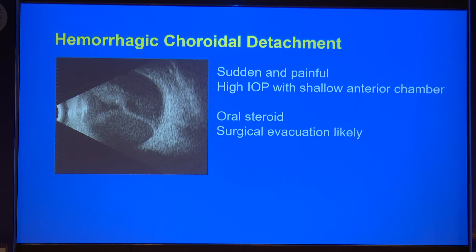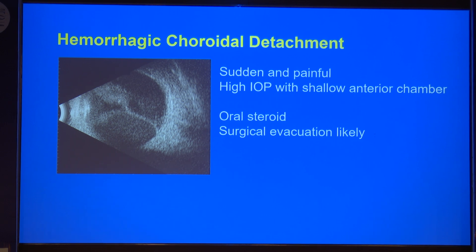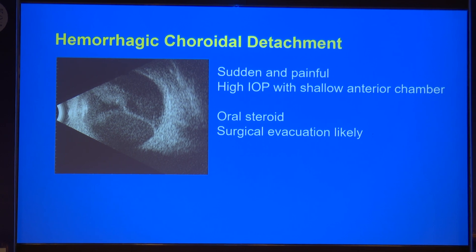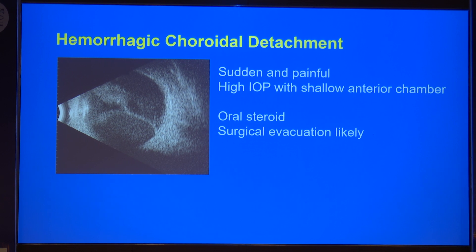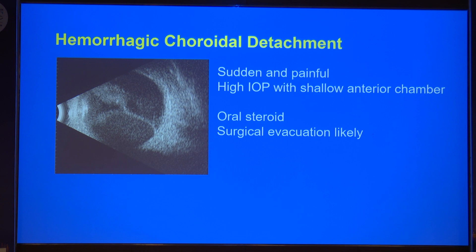Hemorrhagic choroidal detachment is a sudden, painful event after glaucoma surgery and is very debilitating for the patient. There is a vision drop. Most of the time there is high IOP and shallow anterior chamber because of the increase in intraocular content. Oral steroids should be started without any delay in hemorrhagic choroidal detachment, and most of the time surgical evacuation is likely. Sometimes pars plana vitrectomy is also needed, because kissing choroids usually stick together and simple external drainage may not work.